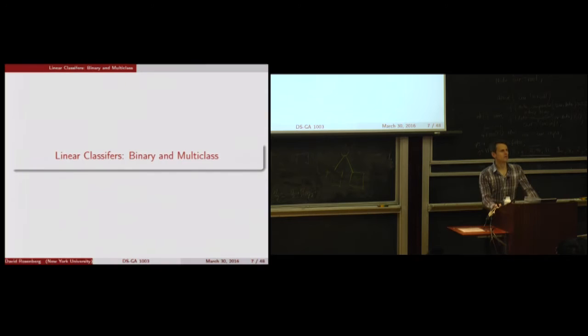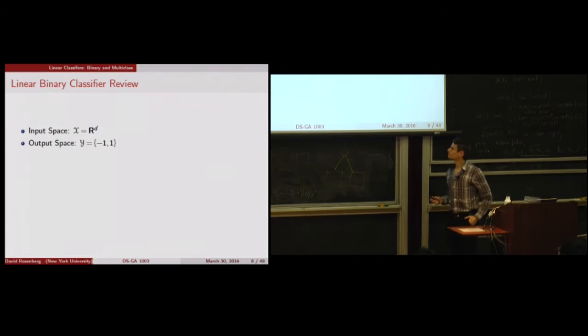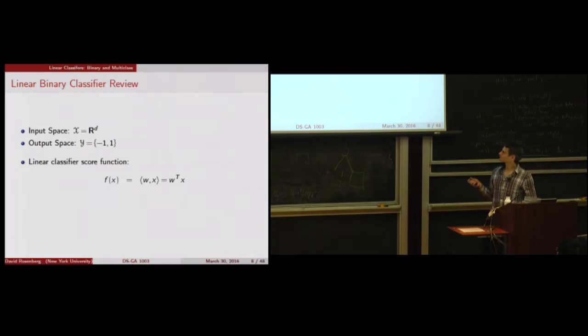To evaluate whether this method is good, let's refresh intuition on how to understand linear classifiers. In the binary classification case with Euclidean input space R^d, output space {-1, +1}, the linear classifier score function is the inner product of W and X — W transpose X — which produces our score for the positive class. Greater than zero predicts one; less than zero predicts negative one. For a hard classification, we take the sign.